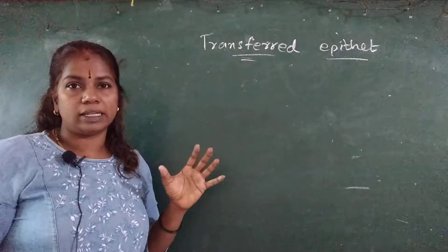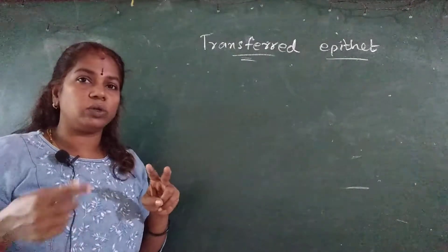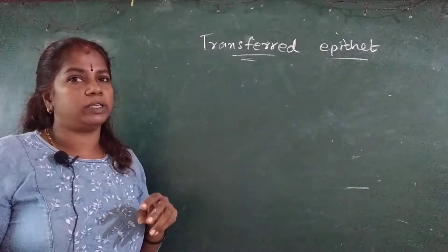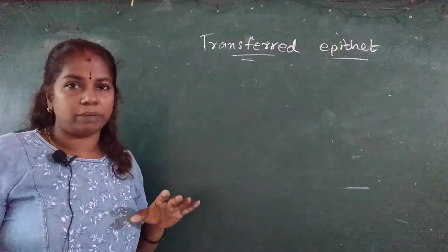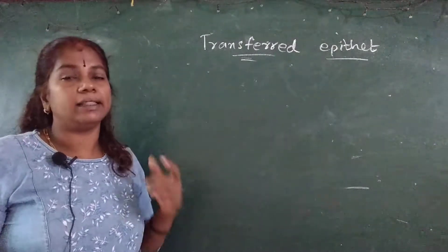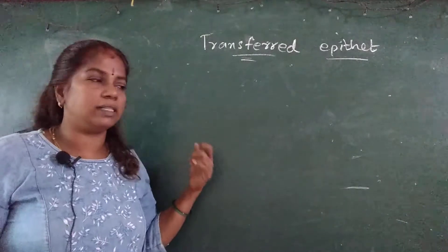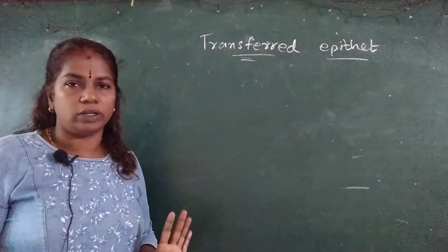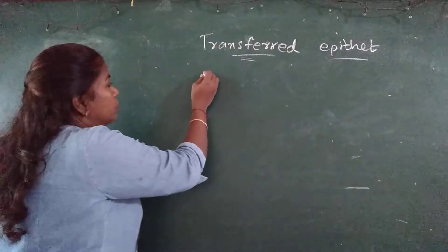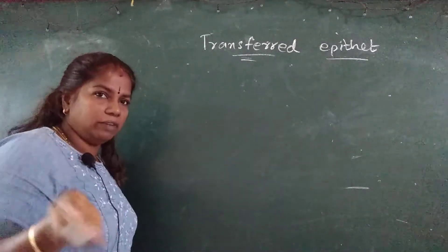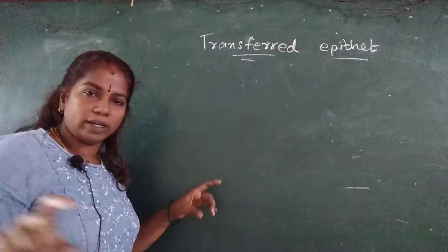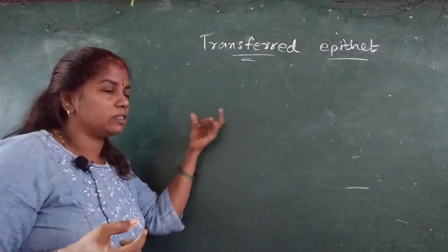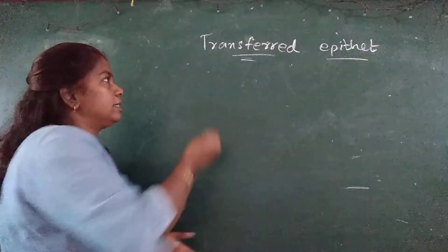What is the difference between personification and transferred epithet? In personification you give the human quality to a non-living object. But here in transferred epithet, you understand properly that this adjective belongs to the human — it is just transferred, meaning it is just a change in the position of the words. And don't confuse it with inversion. In inversion the words are not arranged in proper order. But in transferred epithet it is just a single word transferred from a particular person to another.